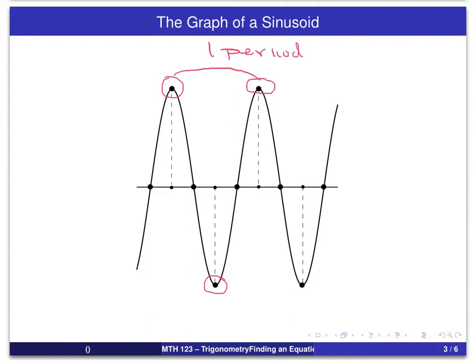And again recall that the difference between the x-coordinates of a high point and the next low point is half a period. And again we will also use the y-coordinates of the high point and the low point to determine the amplitude and the vertical shift.